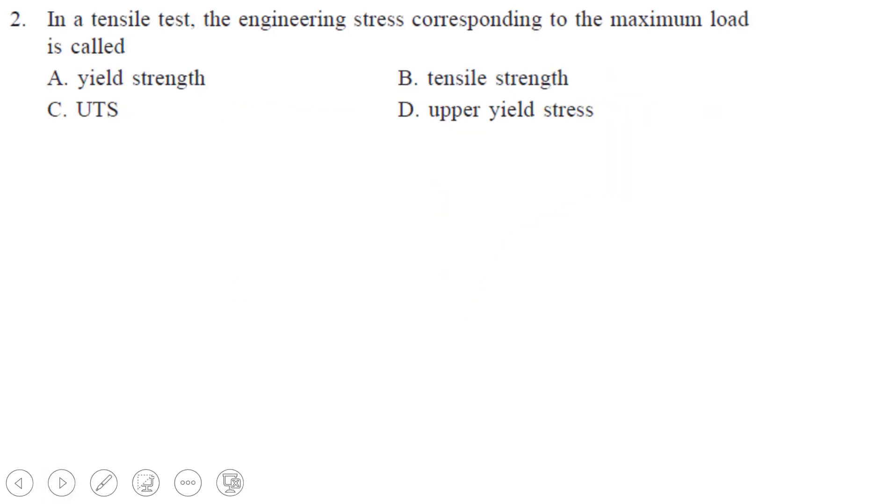Next. In a tensile test, the engineering stress corresponds to the maximum load. The engineering stress corresponding to the maximum load. This is the maximum load. And after this load, the necking starts. So this load is basically called as UTS, ultimate tensile strength.